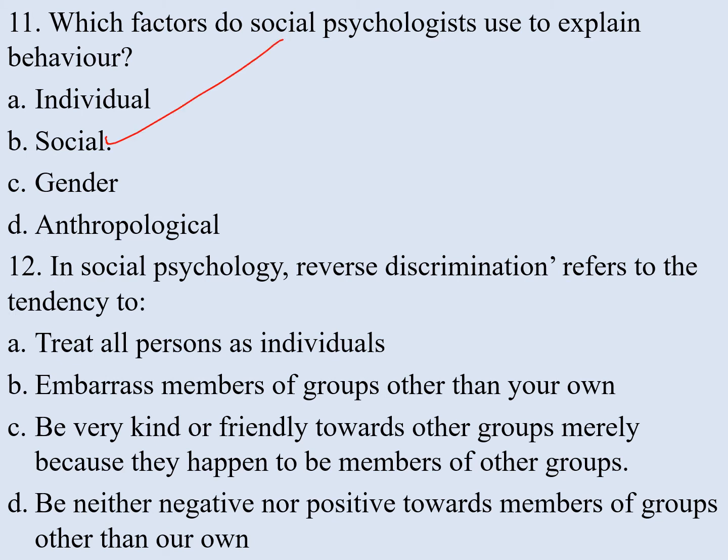Number twelve. In social psychology, reverse discrimination refers to the tendency to: a) treat all persons as individuals, b) embarrass members of groups other than your own, c) be very kind or friendly towards other groups mainly because they happen to be members of other groups, d) be neither negative nor positive towards members of groups other than your own. The correct answer is c.